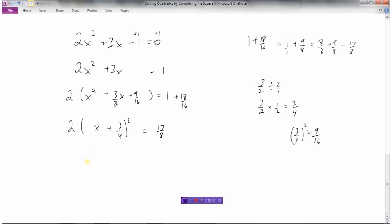And now we need to isolate x squared so we're going to divide by 2. So dividing by 2 here that's gone. We've got to divide this by 2. So again some more fraction work. So 17 eighths times 1 over 2 and we multiply by the reciprocal. So that becomes 17 over 16.